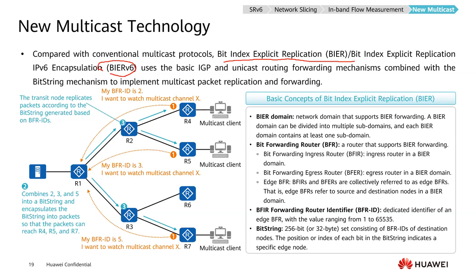BIER multicast technology is based on IGP and unicast routing forwarding mechanisms to flood information. It encapsulates a set of destination nodes of a multicast packet in a bitstream. Transit nodes do not need to establish a multicast distribution tree (MDT) for each multicast flow or maintain multicast flow state. Instead, transit nodes simply replicate and forward packets according to the bitstream.